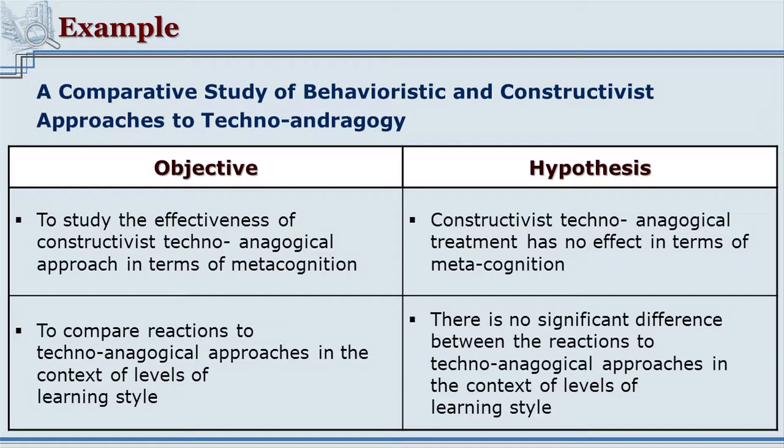We have seen two hypotheses: one stating there would not be any difference, and another stating there would definitely be a significant difference. In this way, each objective has its pairing with the hypothesis in that research. So how do we write the hypothesis?